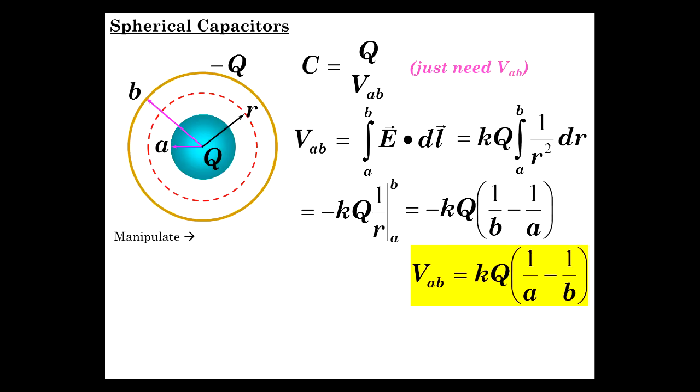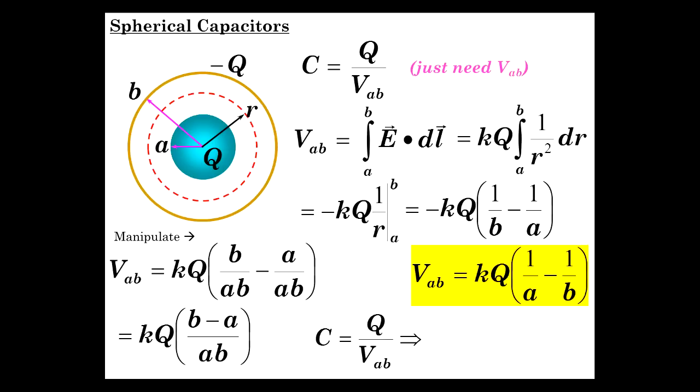And now, let's do a little algebra and bring the A and B together as follows. Multiplied by B over B and A over A are the two terms. This gives us KQ B minus A over AB. Now, this is just V_AB here. So, C is equal to Q over V_AB. So, we're going to take Q and divide it by this and determine the capacitance.